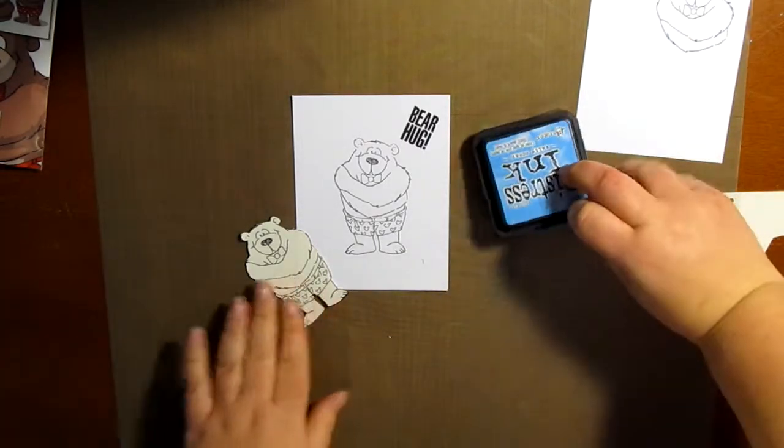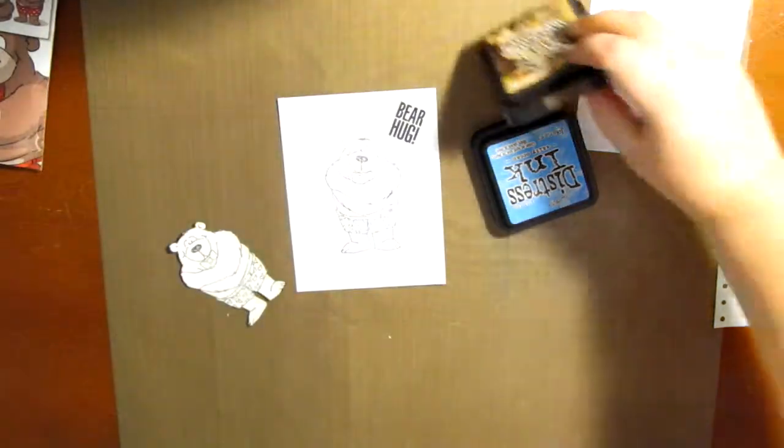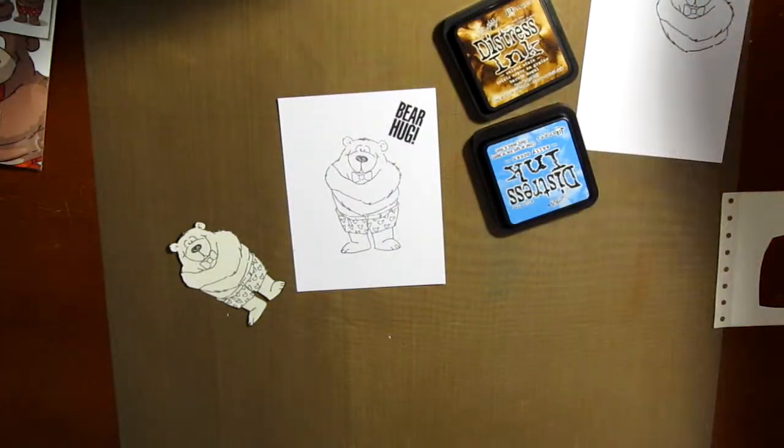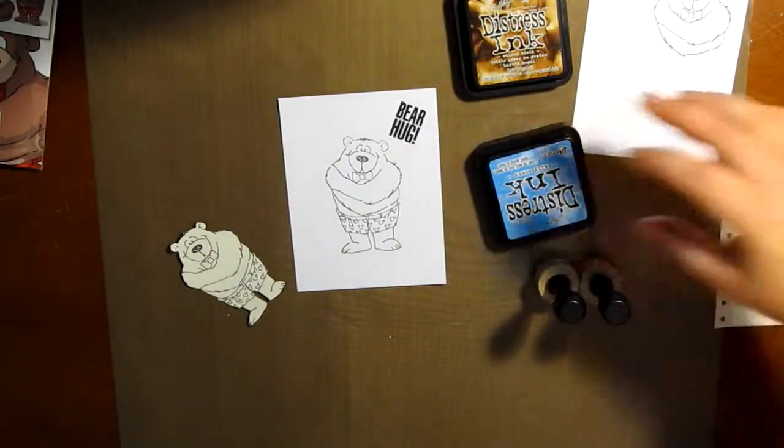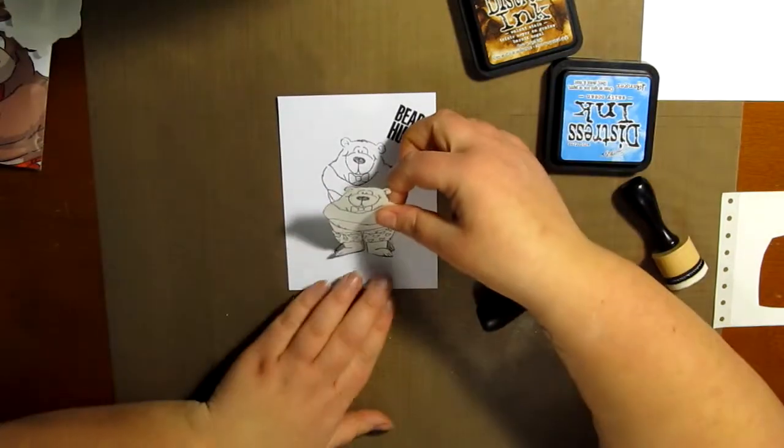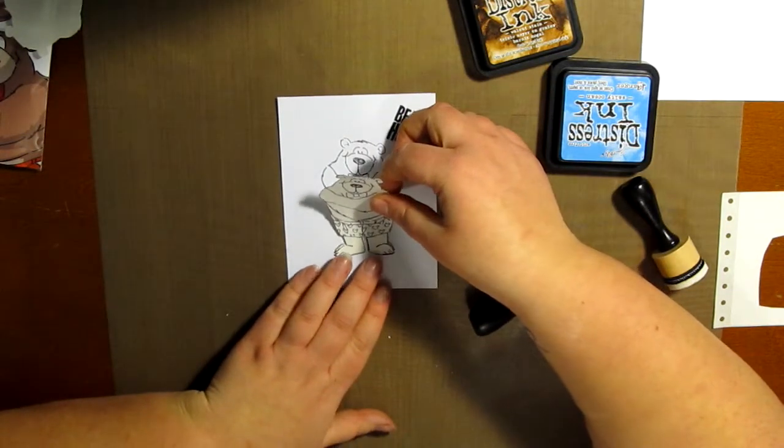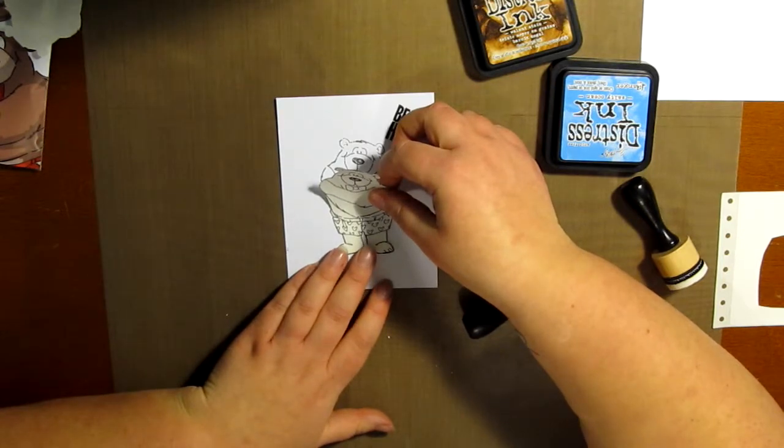I am using the Art Impressions unmounted bear hug set and I've printed that onto my A2 cardstock with the sentiment bear hug on it. I've also stamped it on a piece of sticker paper and cut it out to make a mask so I can cover up the bear while I do the background.